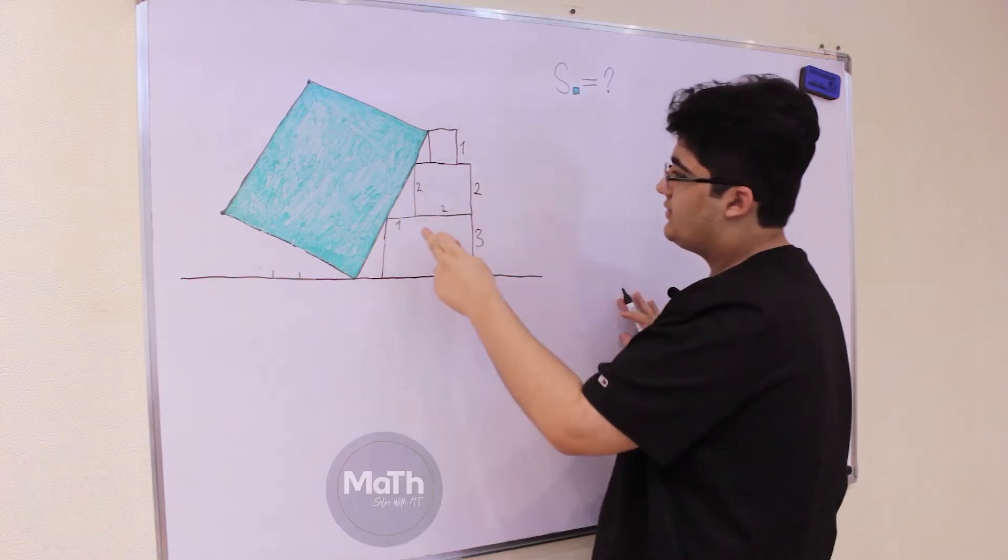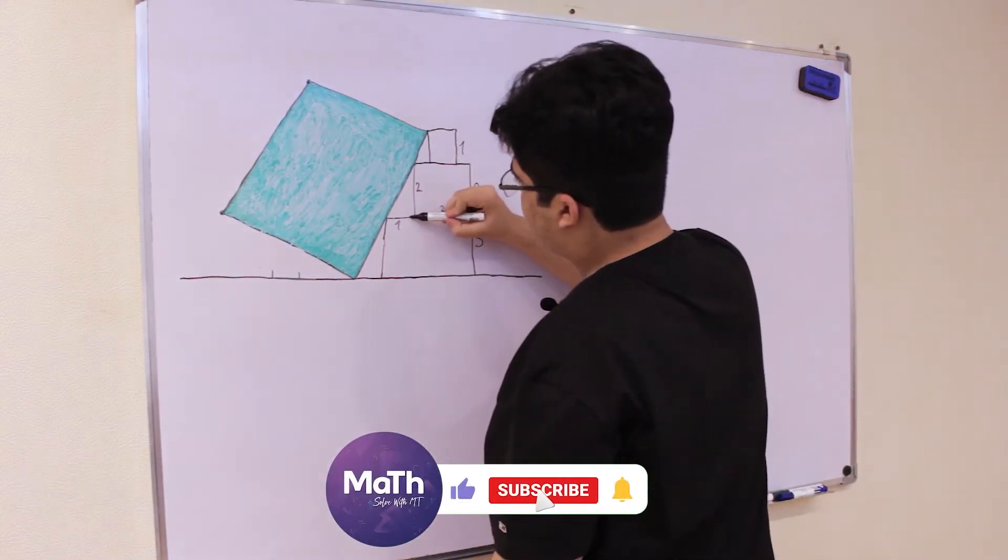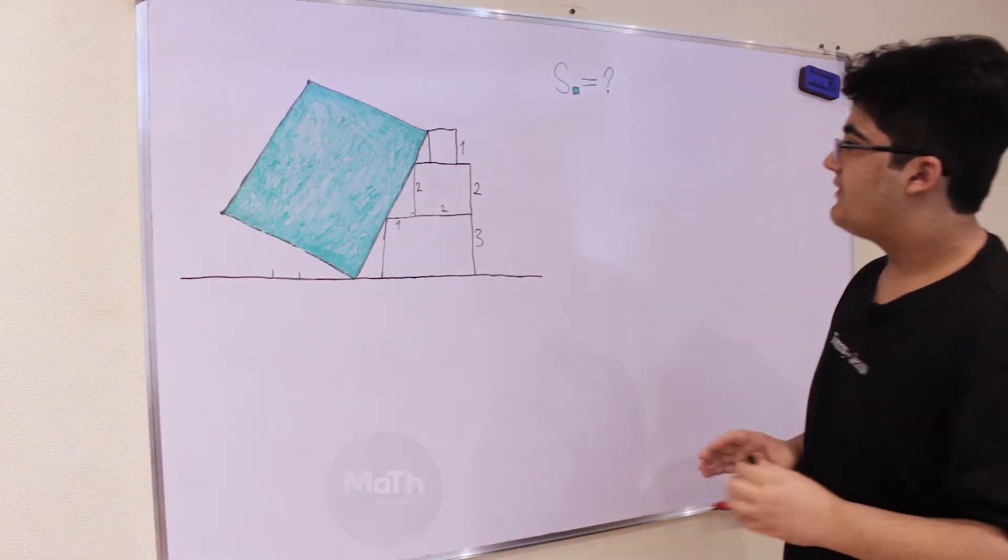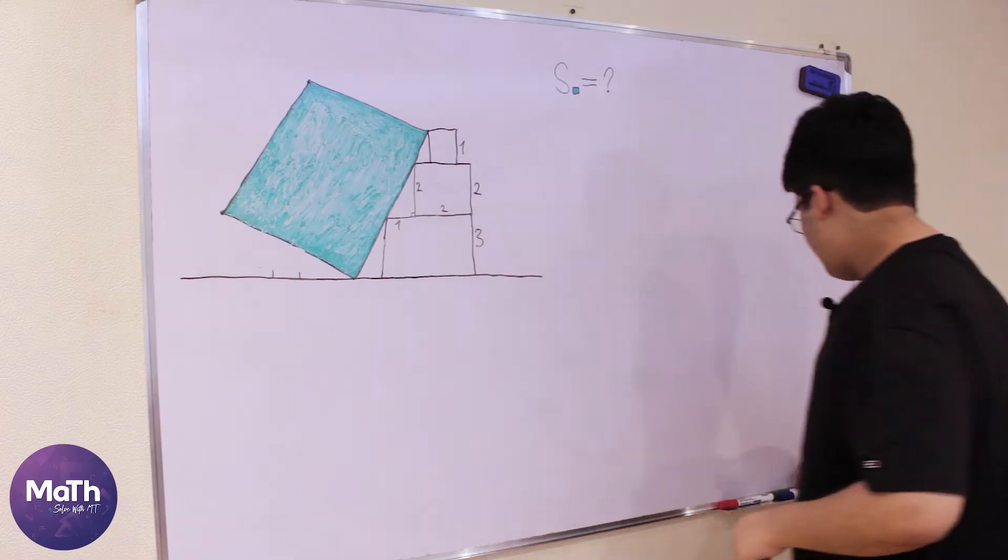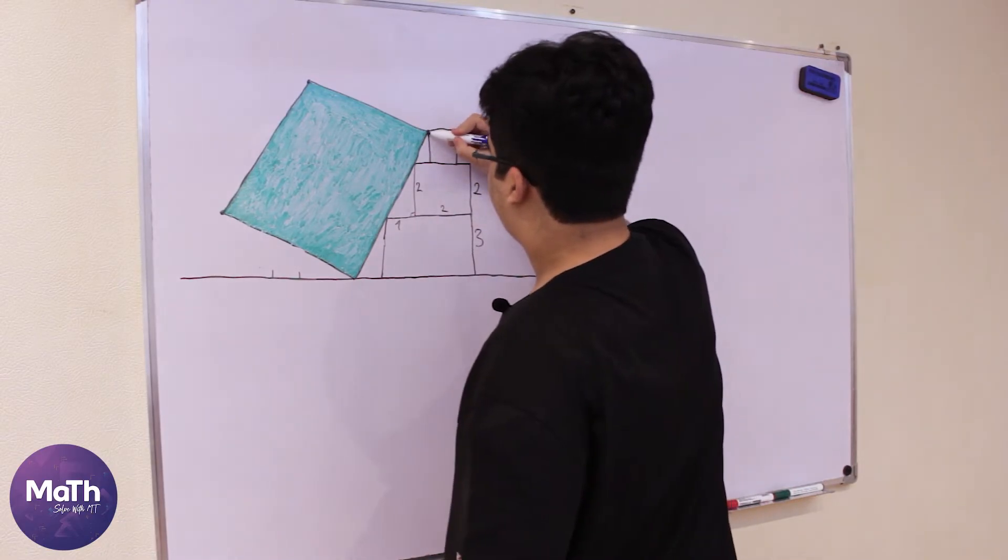So we have here 1, 2, and this is a right triangle. This right triangle is similar to this right triangle.